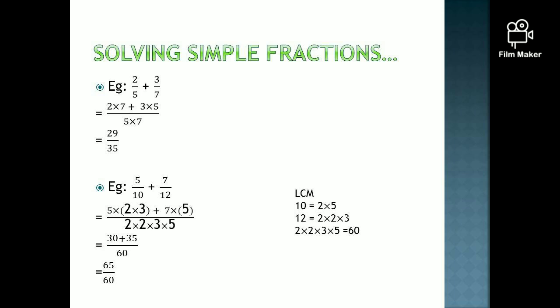Take the first term, that is 5 over 10. The denominator is 10, which is 2 into 5. Now cover 2 into 5 from this denominator. Out of 2 into 2 into 3 into 5, if you cover one 2 and one 5, the remaining term is 2 into 3. Then multiply 5 times 2 into 3.